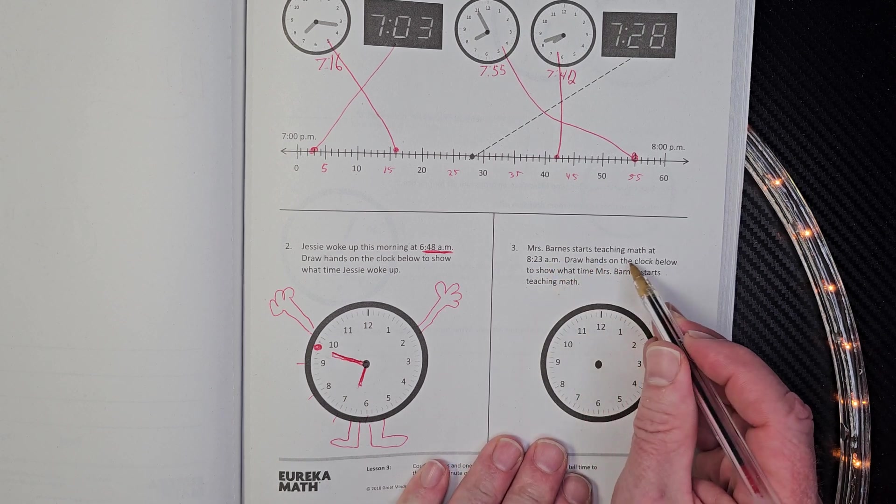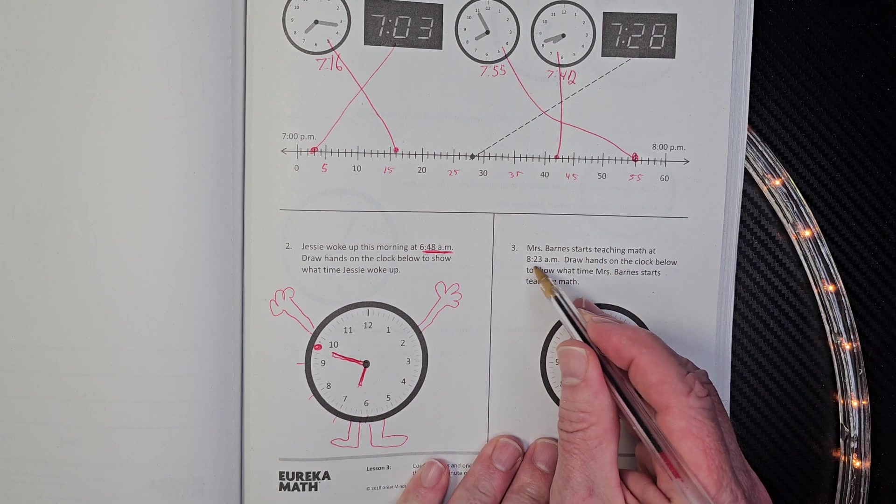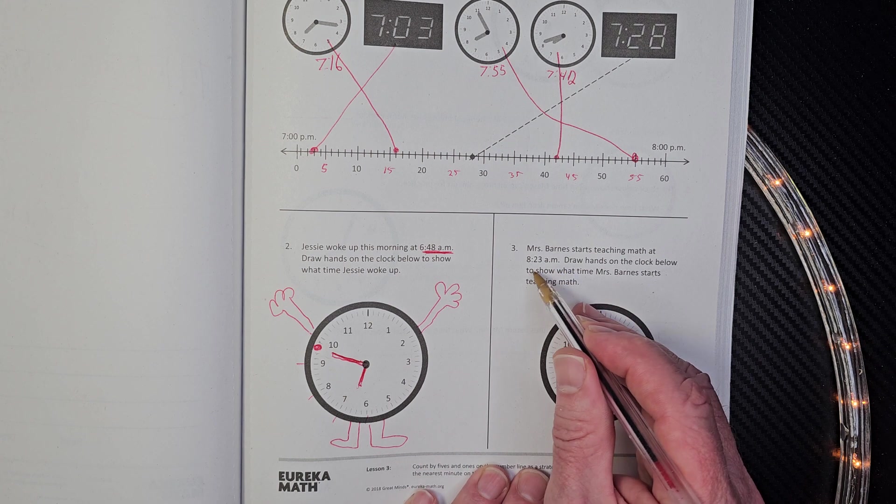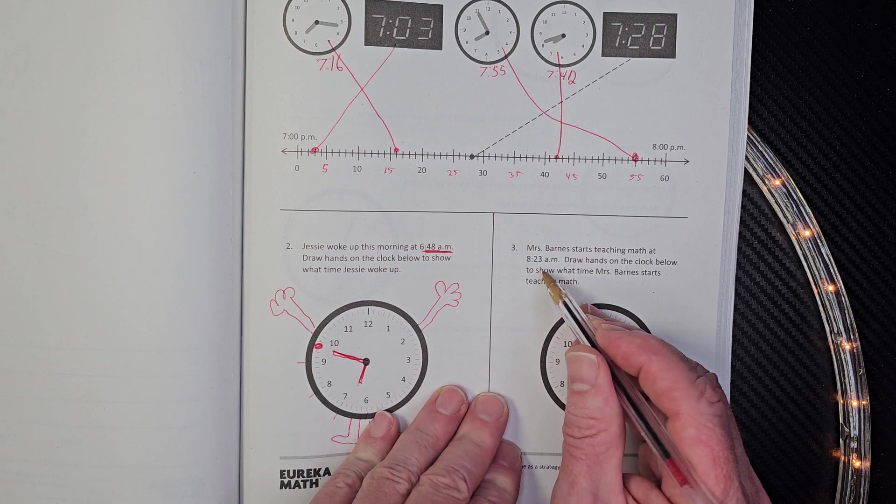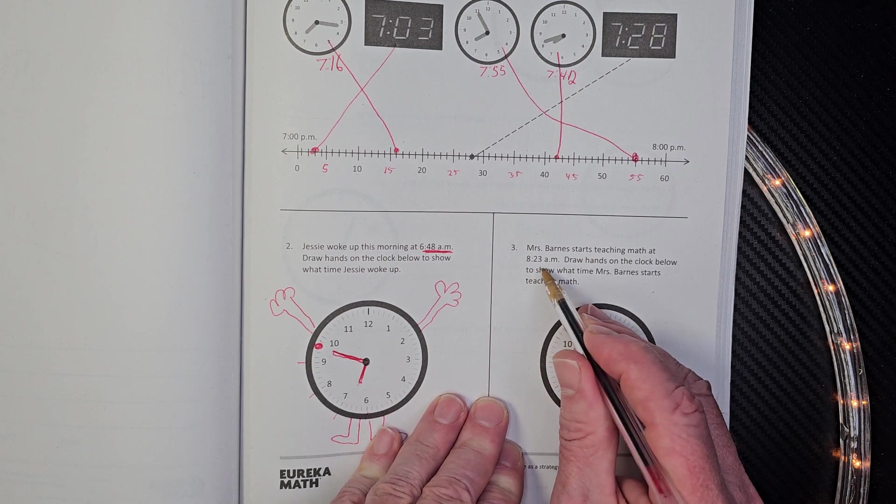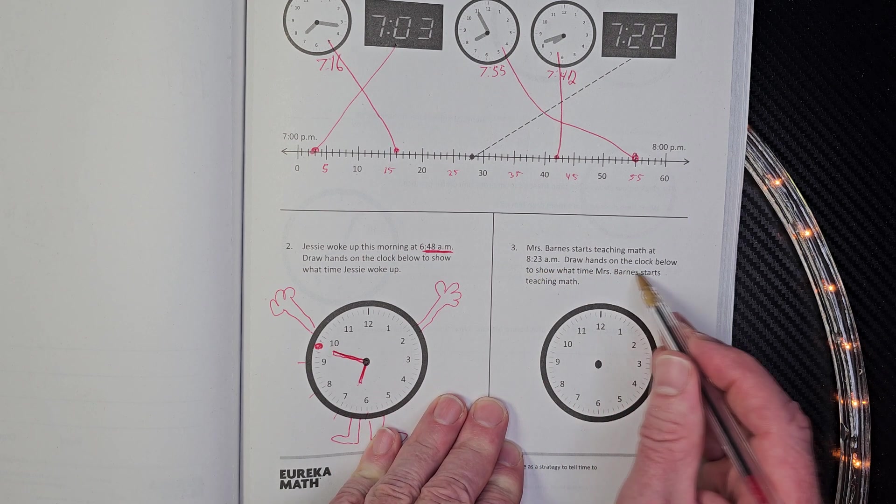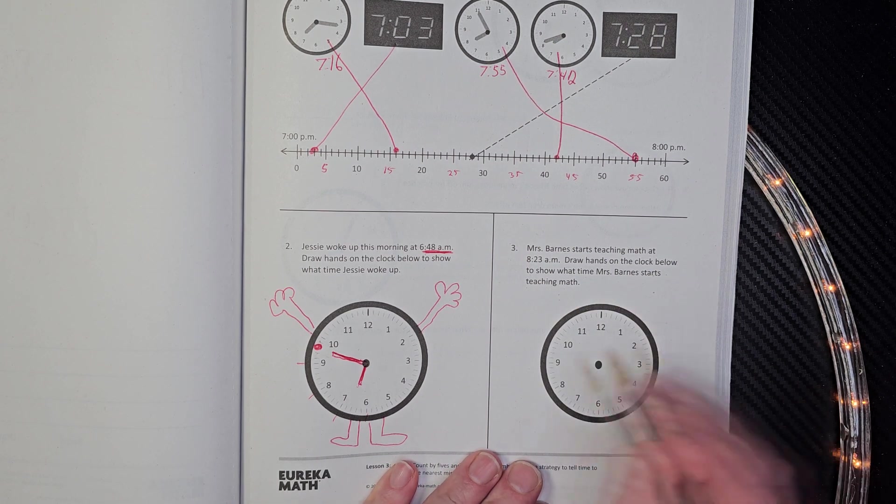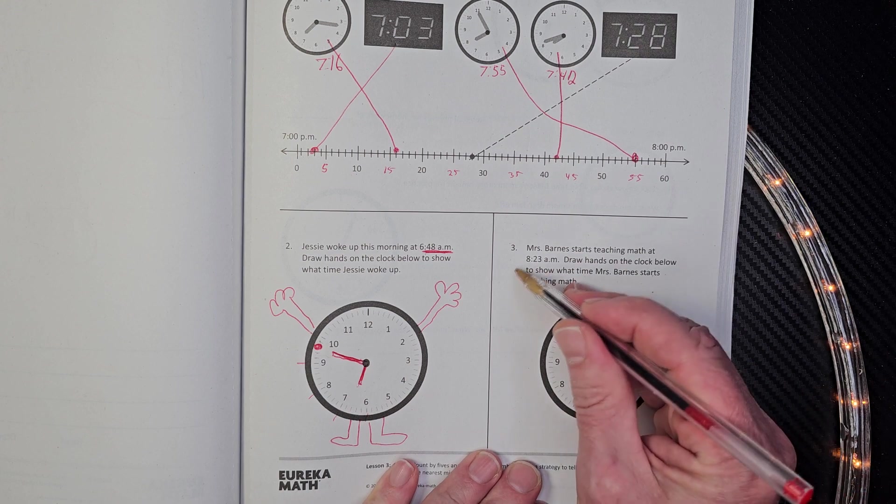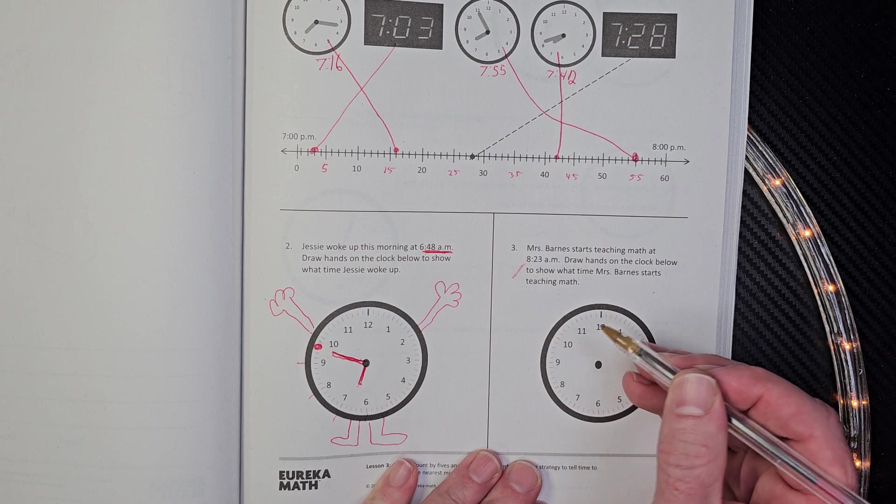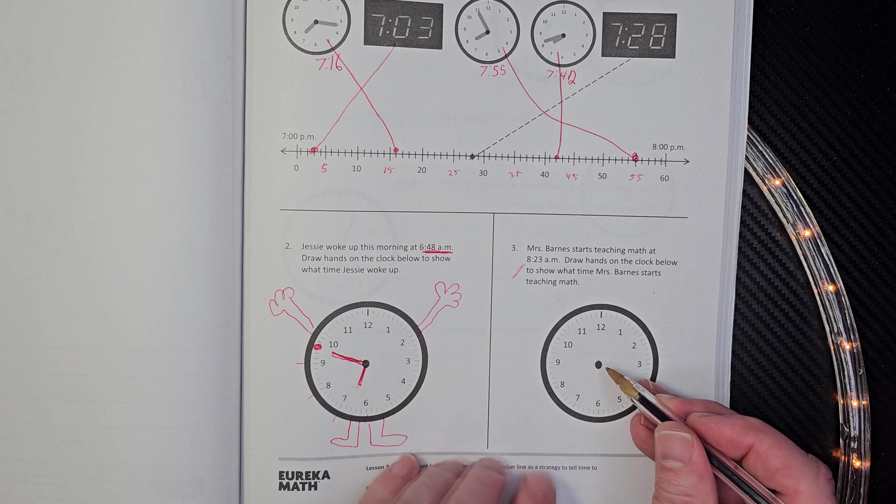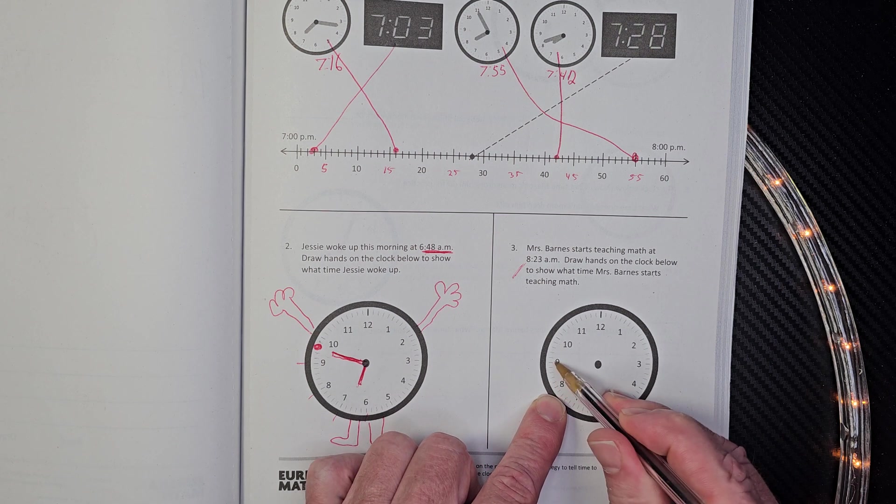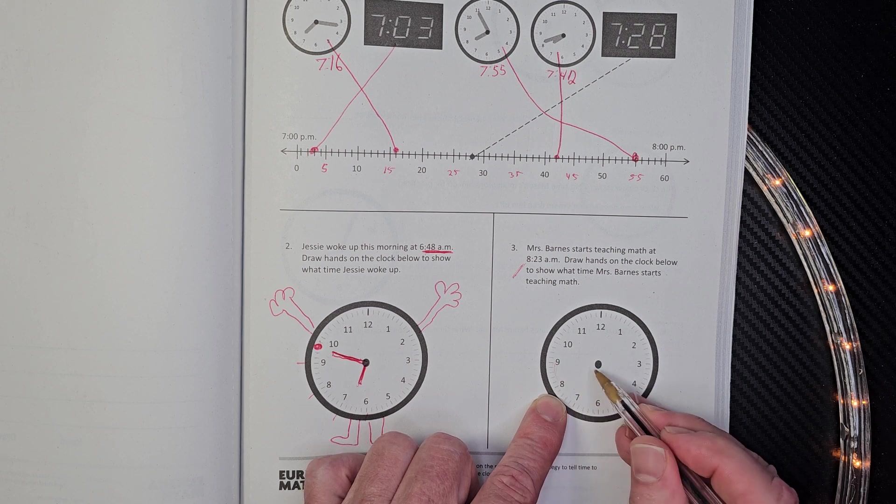Miss Barnes starts teaching math at 8 23 a.m. That's pretty early, Miss Barnes. You know, once you have a little morning meeting and a little cookie break or something, but 8 23 a.m. Draw hands on the clock below to show what time Miss Barnes starts teaching math. You really want to draw those hands on there, don't you? Again, this is going to be the lady hand representing. So we need to find an eight here. Here's eight. All in this area is the eight o'clock stuff. All right.